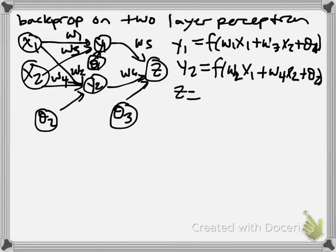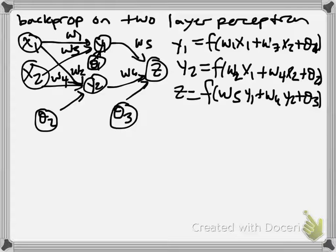And then Z is going to be a weighted and non-linear transferred sum of Y1 and Y2. Okay, here we are. That's our equations for our two-layer perceptron.